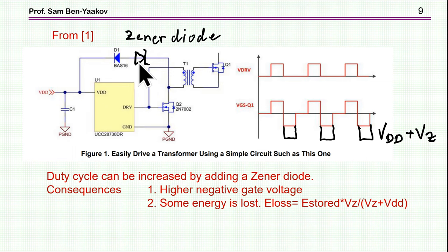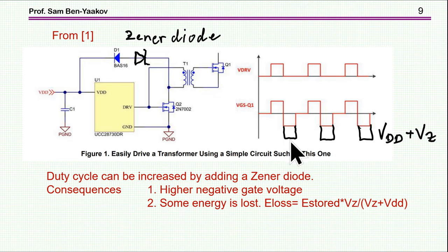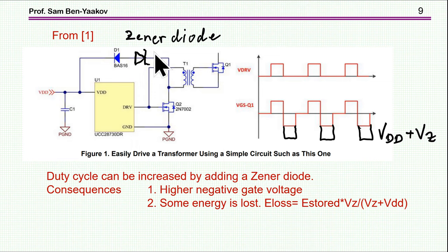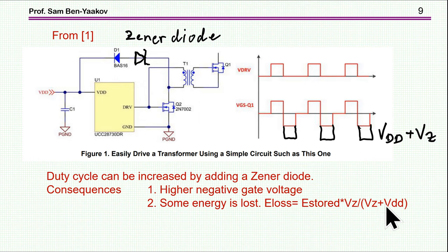If we need more than 50% duty cycle, we need to increase the reset voltage. This can be done with a Zener diode, shown here. The reset voltage is then higher, and therefore the reflected voltage to the secondary — that is, to the gate — is higher, giving a larger negative value. One has to make sure we stay within the gate voltage limit. In this case, we have a higher negative voltage, and some of the energy will be lost to the Zener diode. The proportion of energy lost is approximately the Zener voltage divided by the total reset voltage.